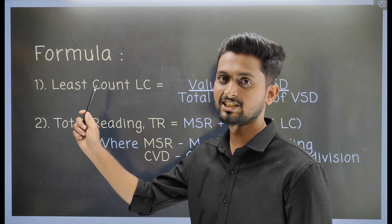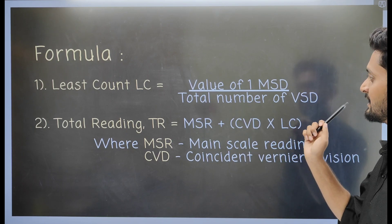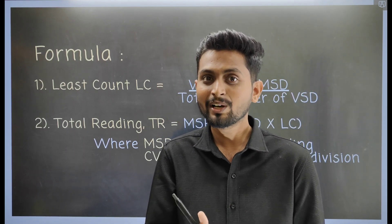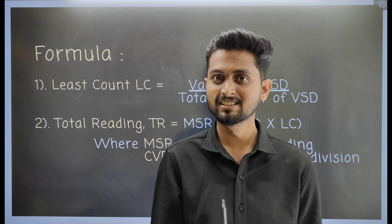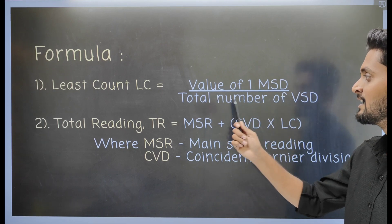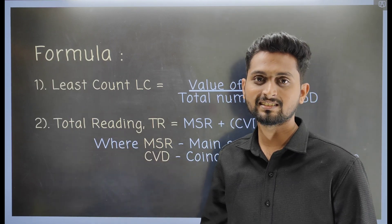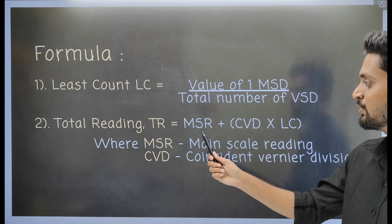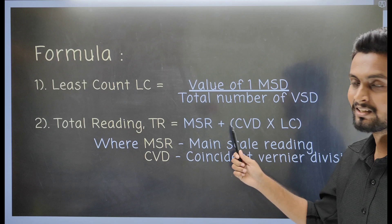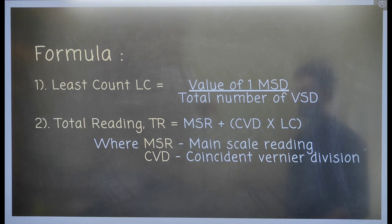We need two formulas. The first is the least count: LC = value of 1 MSD divided by total number of VSD, where MSD means main scale division and VSD means vernier scale division. The second formula is total reading: TR = MSR + (CVD × LC), where MSR is the main scale reading and CVD is the coincident vernier division multiplied by the least count.